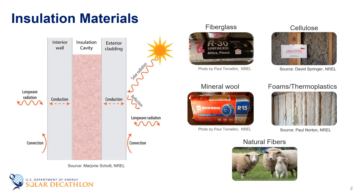Insulation materials include fibrous materials such as fiberglass, mineral wool, cellulose, and natural fibers. Other materials include various types of foams and thermoplastics, autoclaved concretes, and reflective facings. All of these materials help to mitigate heat transfer through the building envelope, whether by reducing conduction, convection, radiation, or more likely some combination of the three.